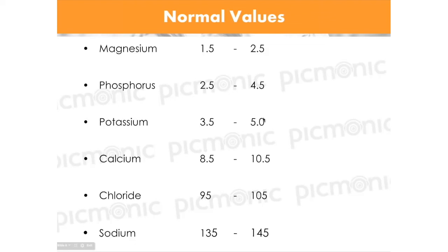With hypomagnesemia, what do you see for deep tendon reflexes? If you hit somebody on the knee, that reflex is going to be increased — increased deep tendon reflexes. You'll also see seizures and tachycardia; everything is going to be up with a low magnesium level, which is less than 1.5.